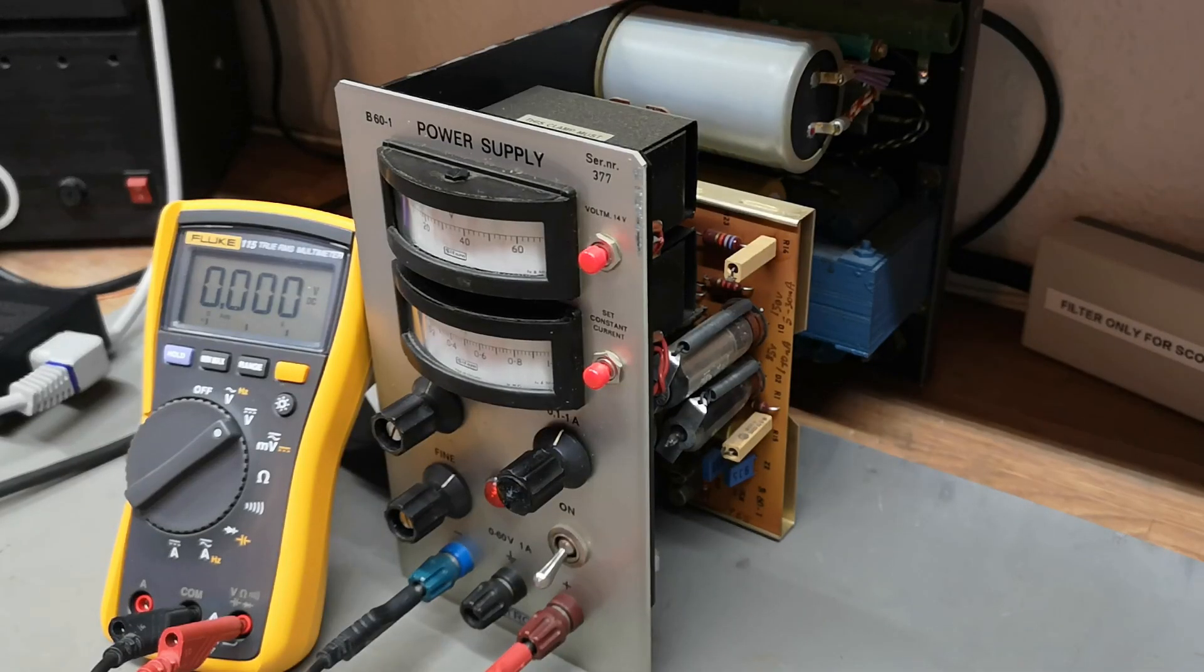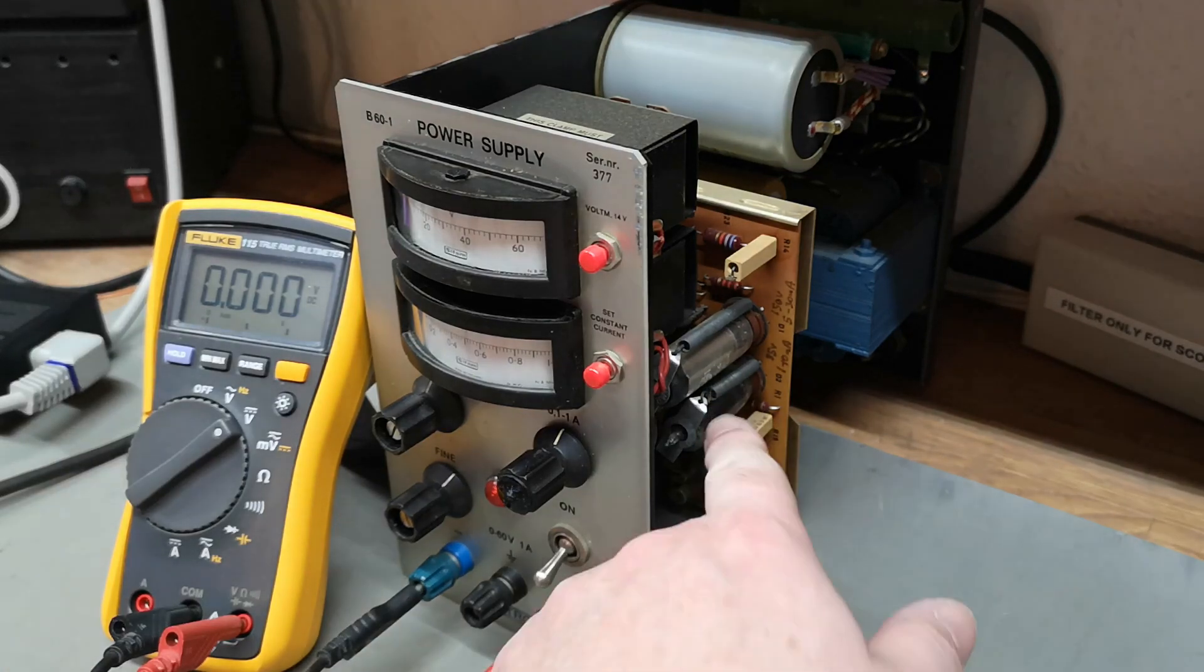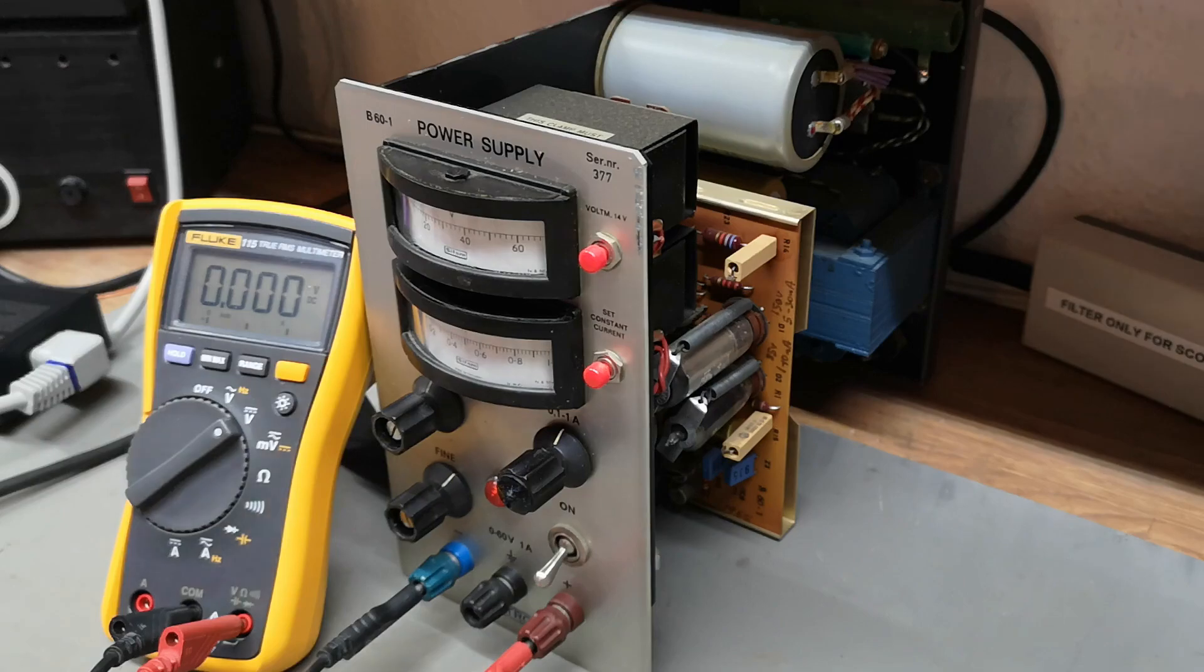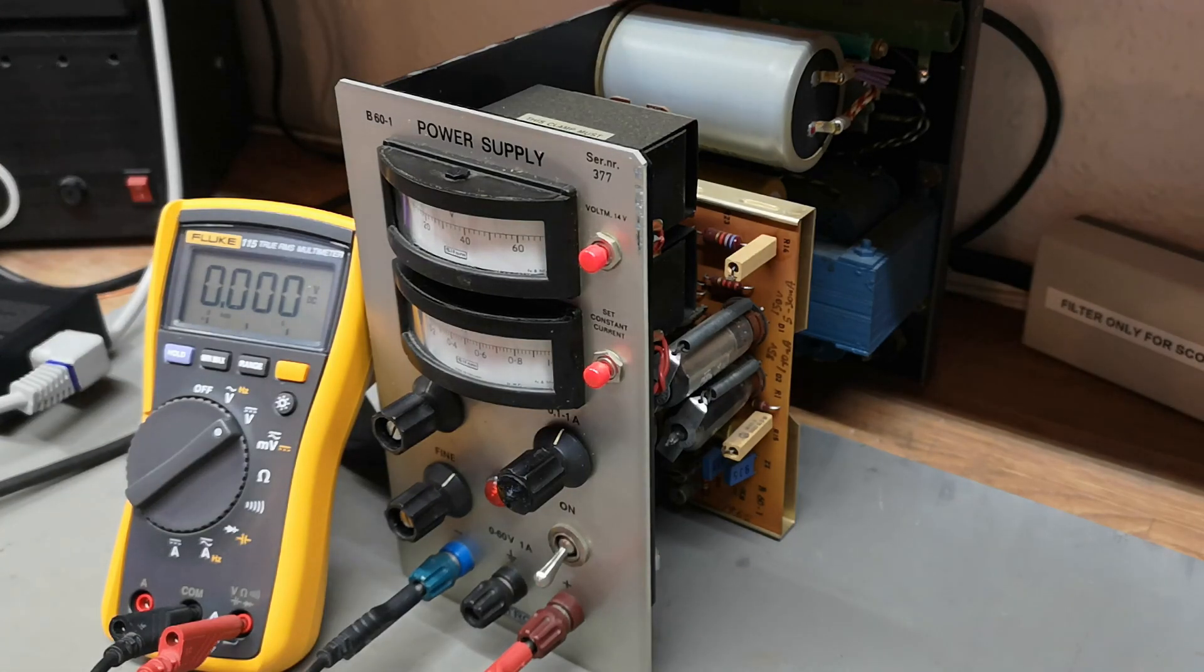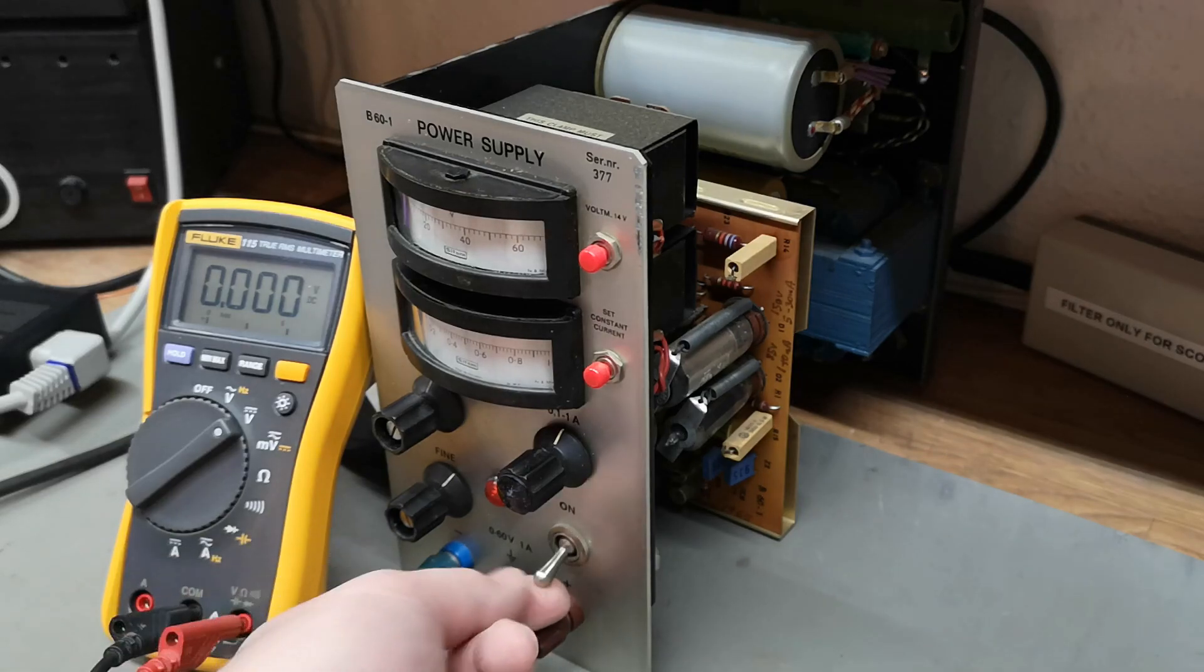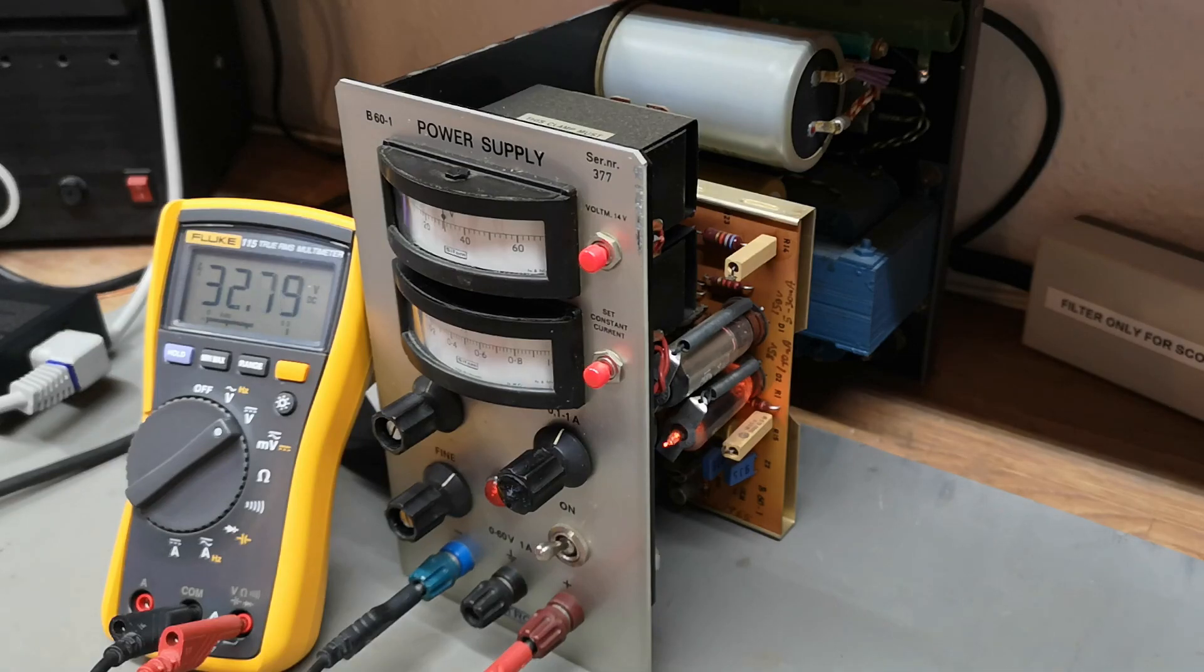So now we're going to power this up the first time, and I dimmed the light a little bit on purpose so hopefully we can see the voltage regulators. Mains is applied, nothing bad happened, and we got light and we got output.